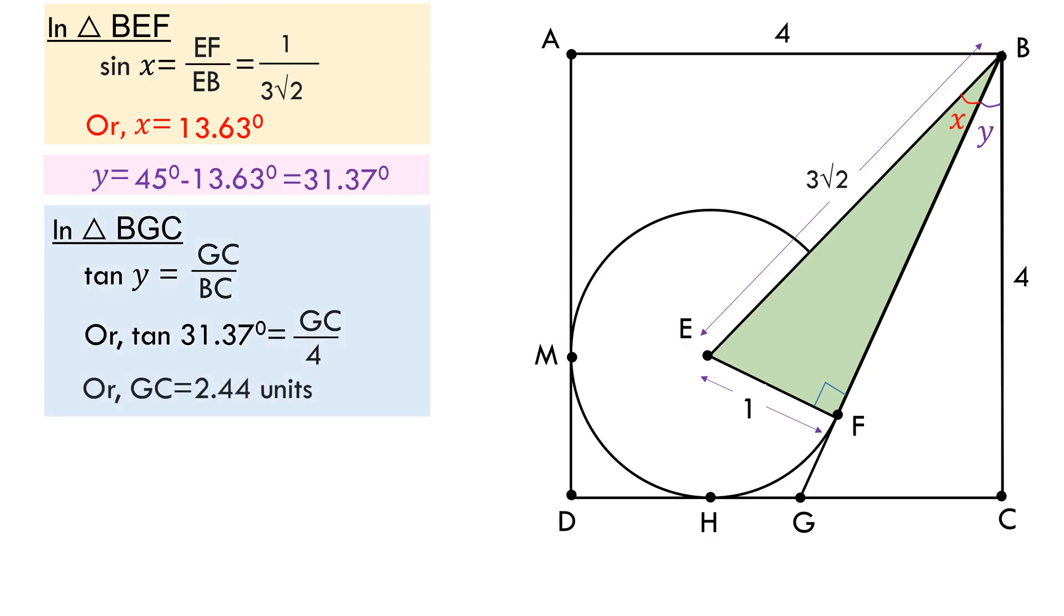And as we said before we now have both base and height for triangle BGC. Therefore area of triangle BGC equals half times BC times GC which gives us area of the triangle BGC to be 4.88 square units.